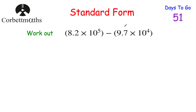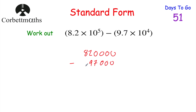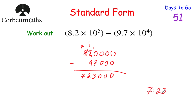Here's a subtraction question to try: use the same approach, write them out in full and give the answer in standard form. 8.2 × 10⁵ = 820,000 and 9.7 × 10⁴ = 97,000. So 820,000 − 97,000 = 723,000. Writing that in standard form: 7.23 × 10⁵, because we move the digits 1, 2, 3, 4, 5 columns to the left.